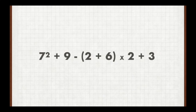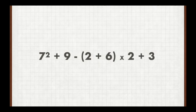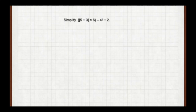Now we just have addition and subtraction. Remember, you have to start left and move your way to the right. So: 49 plus 9 is 58, 58 minus 16 is 42, and then 42 plus 3 is 45. We work our way left to right.